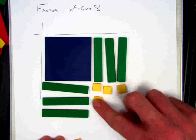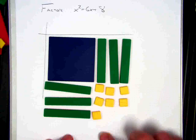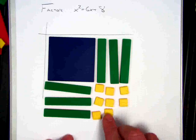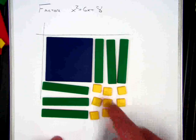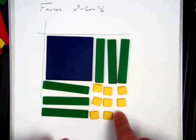I'm going to try to fill in. It looks like that didn't work. If I try to arrange x squared plus 6x plus 8 like this, I have a hole right here.